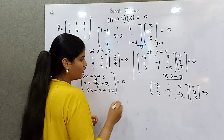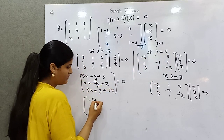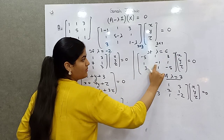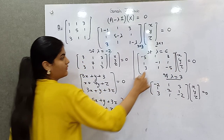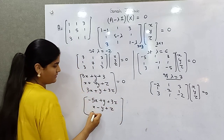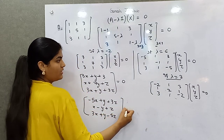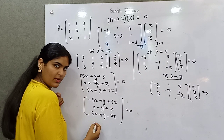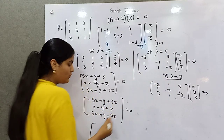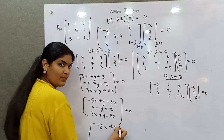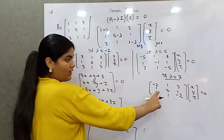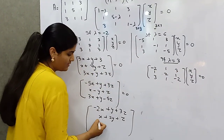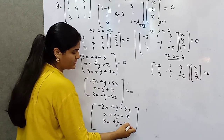For lambda = 6, the system gives: -5x + y + 3z = 0 and x - y + z = 0. For lambda = 3, the system gives: minus 2x + y + 3z = 0, x + 2y + z = 0, and 3x + y minus 2z = 0.